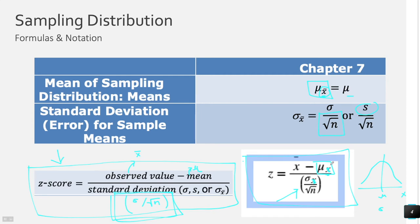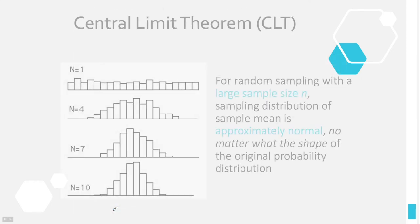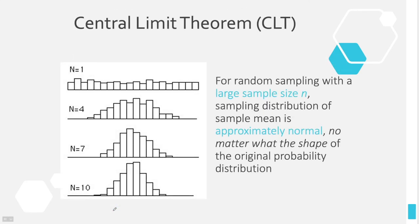When you plug everything in, a data value in this distribution is x-bar — the mean of all sample means is mu, and the standard deviation is sigma divided by the square root of n. So the z-score formula becomes: x-bar minus mu, all divided by sigma over the square root of n. The mean of all z-scores is zero and the standard deviation is one, which we call the standard normal distribution.